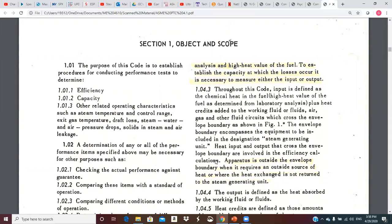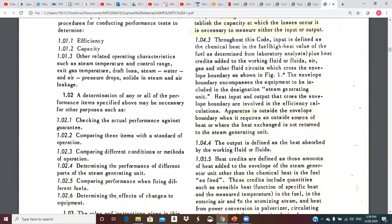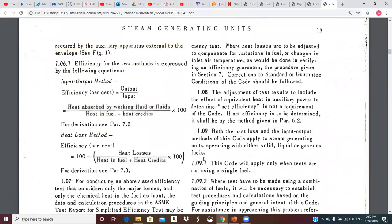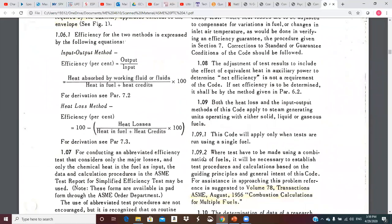If you do your own test by your own procedures and it ever gets into a court of law or legal proceeding, they're going to challenge that. Say, well, that's not the right way to do this. Well, this is the document that lays out the appropriate way to do a test so that everyone should be able to be on the same page. Other related operating characteristics such as steam temperature and control range, exit gas temperature, draft loss, steam, water, air, pressure drops, solids and steam, and air leakage.